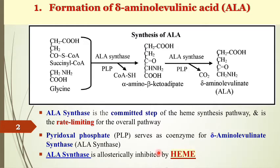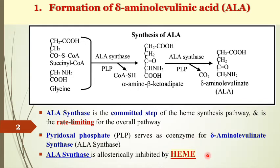The rate of synthesis of heme depends upon the need of our body. If there is excess heme in the bone marrow, we don't need to synthesize any more — this is feedback inhibition, or allosteric inhibition, of the key enzyme. If there is deficiency of heme, the enzyme is activated; if there is excess heme, the enzyme is inhibited. You must know the enzyme name, substrates, and products.